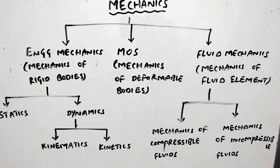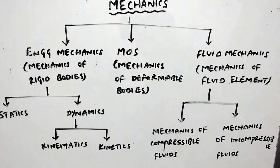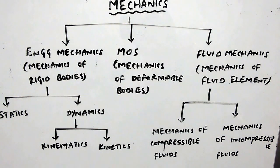Engineering mechanics is a branch of science that deals with rigid bodies under the application of loads. Mechanics of solids is a branch that deals with deformable bodies under the application of loads. Fluid mechanics is a branch that deals with fluid elements, whether the fluid element is a compressible or incompressible element.